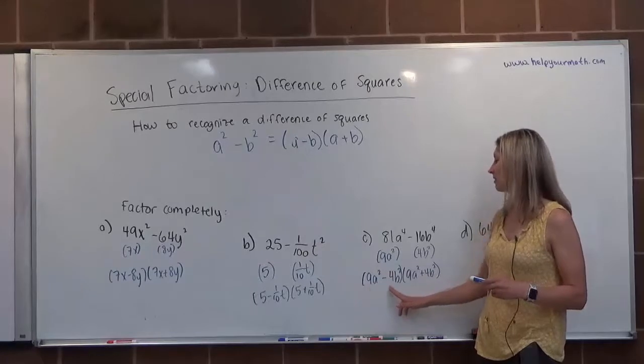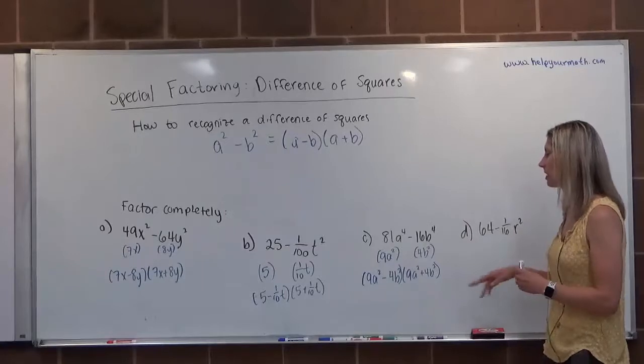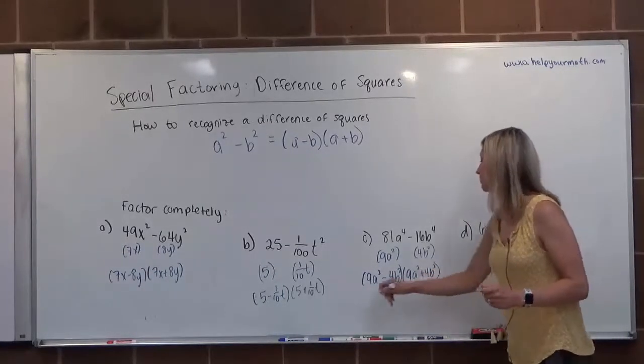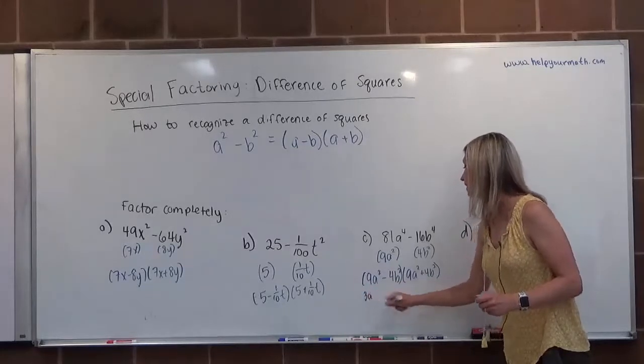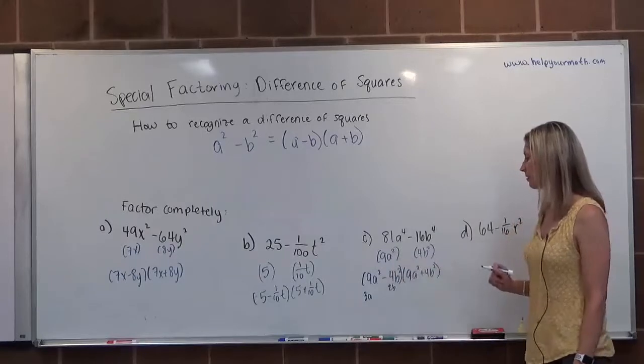I see here that when we factor completely, there should be no common factors in any of the factors. And this happens to be a difference of squares. 9a squared has a root of 3a. 4b squared has a root of 2b. So this one can continue to be factored.